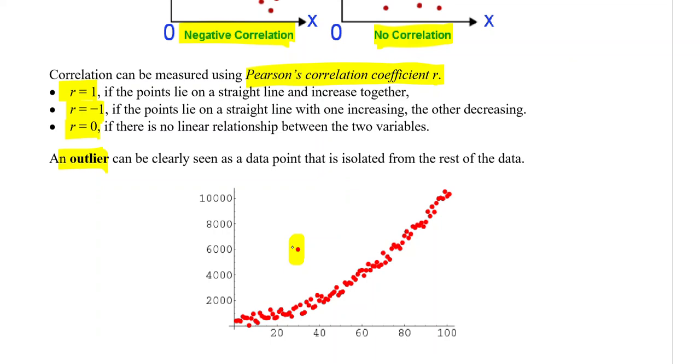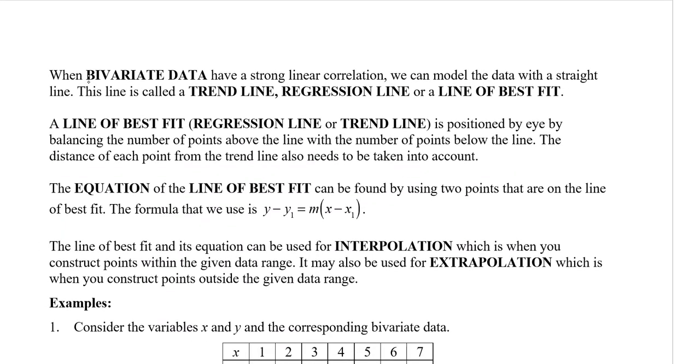When bivariate data have strong linear correlation, we can model the data with a straight line—a line of best fit, also called a regression line or trend line. The line of best fit is positioned by balancing the number of points above the line with the number below. We want to make sure it goes through two of those points so you can find the equation. The equation can be found using the two-point formula: y minus y1 equals m bracket x minus x1. You'll probably also have to use the gradient formula to find the gradient first.